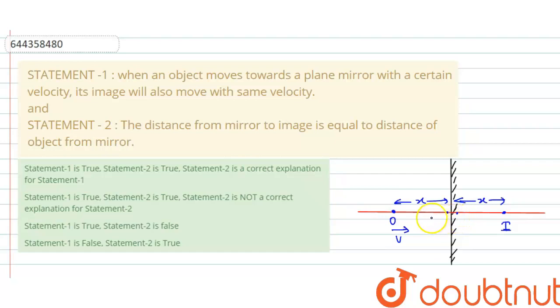So in this interval, object travels a distance x and the image also travels the same distance x in same time interval. That means speed of image is also same. So when object moves towards plane mirror with a certain velocity, its image will also move with same velocity.